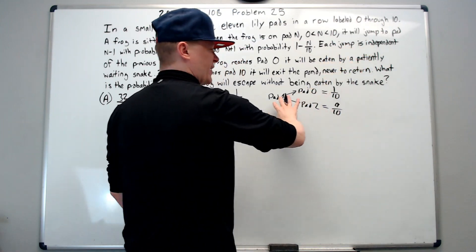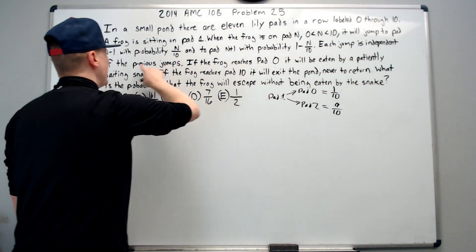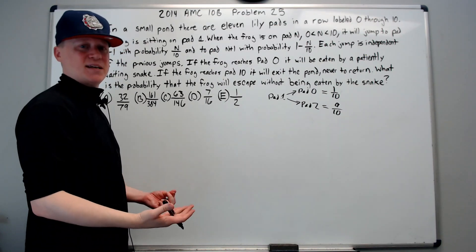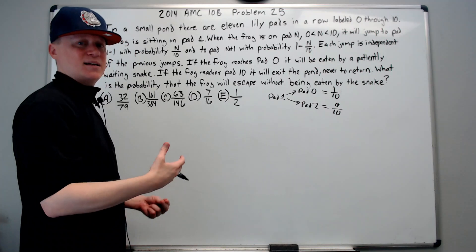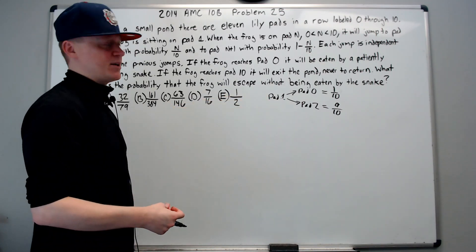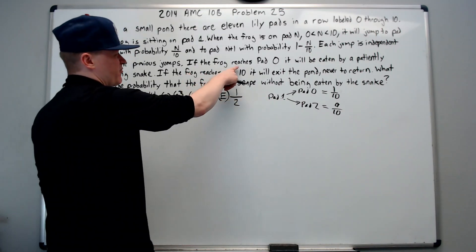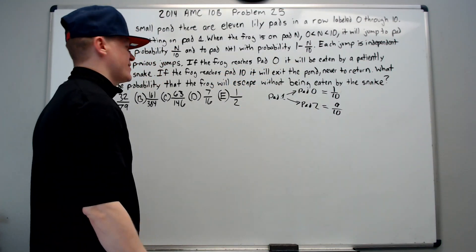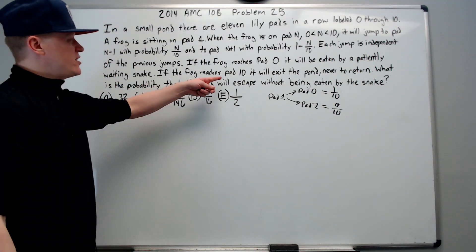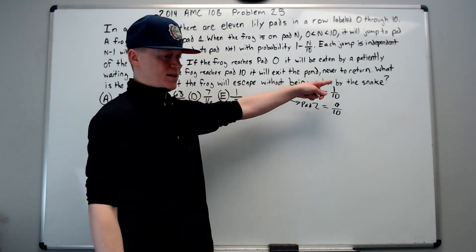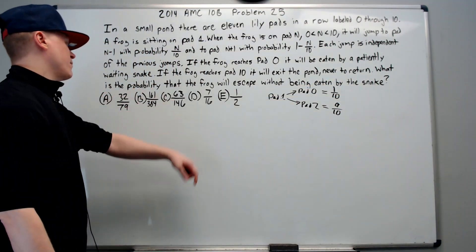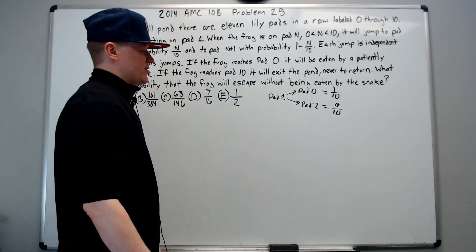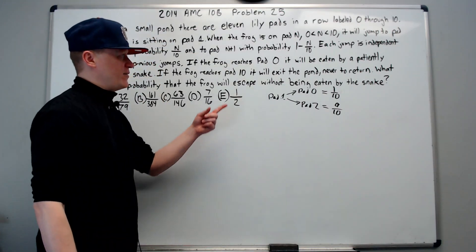Each jump is independent of the previous jump — he doesn't have different probabilities each time he jumps from the same lily pad; it always works the same way. If the frog reaches pad 0, it will be eaten by a patiently waiting snake. If the frog reaches pad 10, it will exit the pond, never to return. What is the probability the frog will escape without being eaten by the snake?